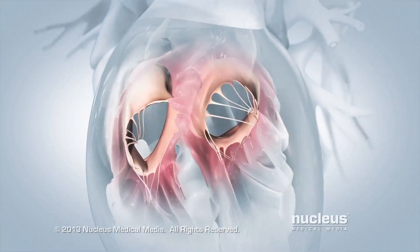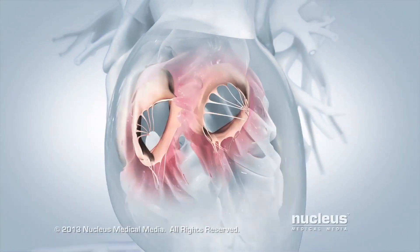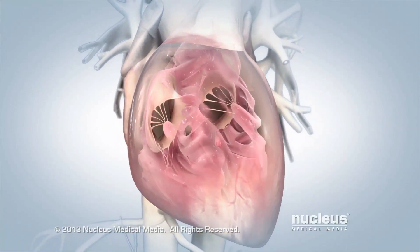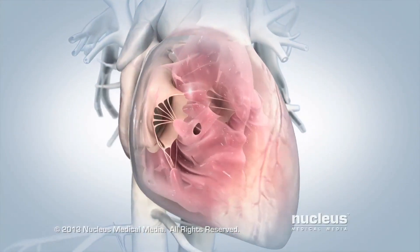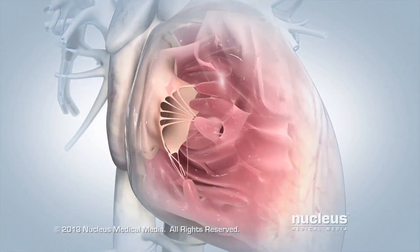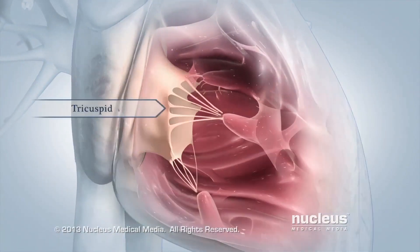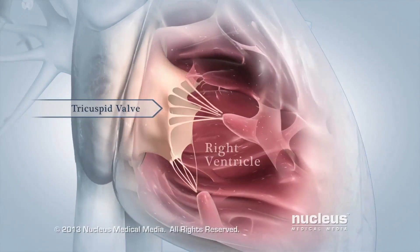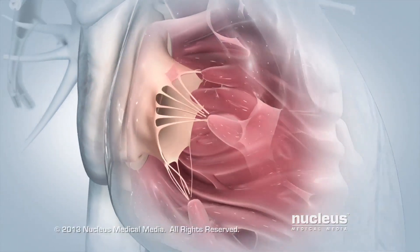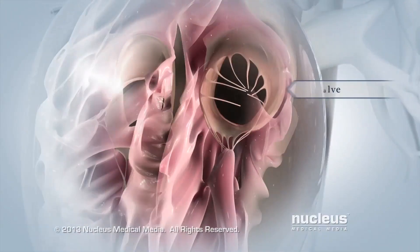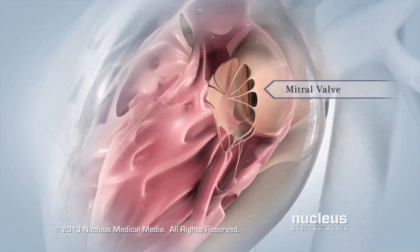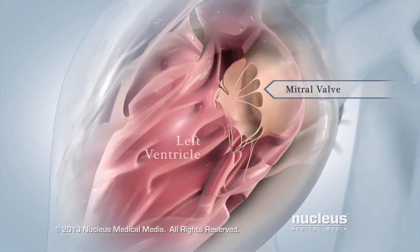Two valves sit like doors between your atria and ventricles to prevent blood from flowing backward into your atria. The tricuspid valve opens into your right ventricle, and the mitral valve opens into your left ventricle.